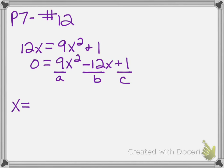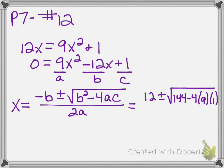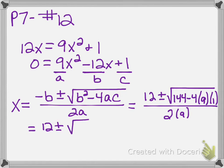Now the quadratic formula says x equals — I'll write it out again so you can see which variables get replaced with which numbers. B is negative 12, so negative b is positive 12, plus or minus the square root of: b squared is 144, minus 4 times a (which is 9) times c (which is 1), all over 2 times a which is 9. PEMDAS says do the multiplication first: 4 times 9 times 1 is 36, and 144 minus 36 is 108. All over 18.